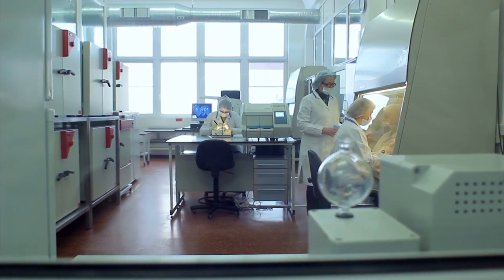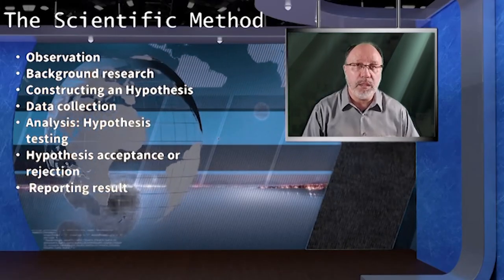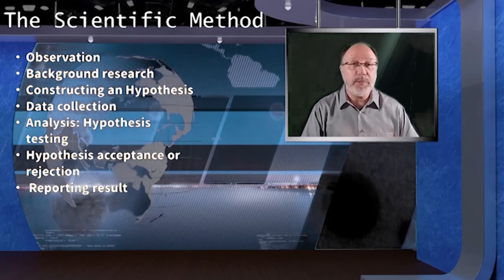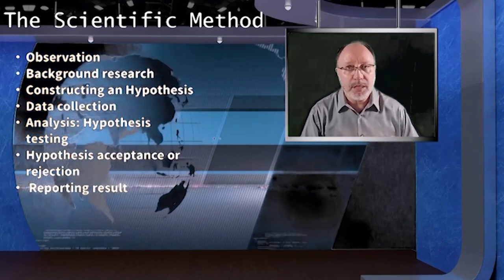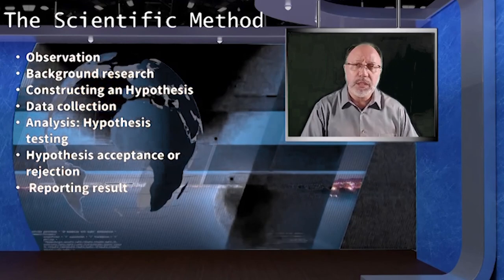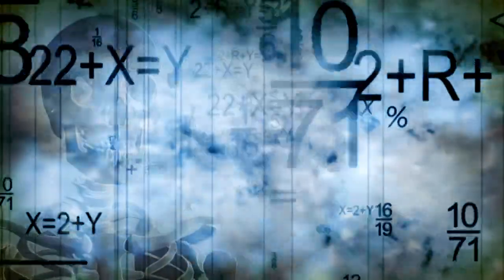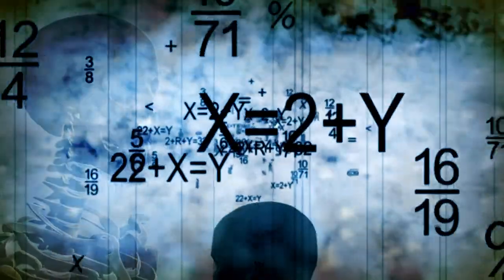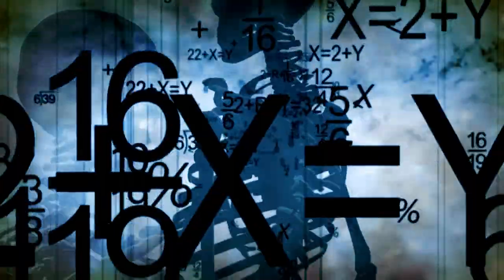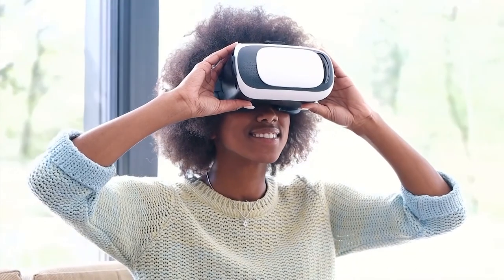Even though we show the scientific method as a series of steps, keep in mind that new information or thinking might cause a scientist to back up and repeat steps at any point during the process. A process like the scientific method that involves such backup and repeating is called the interactive process. Whether you are doing a science fair project, a classroom science activity, independent research, or any other hands-on scientific inquiry, understanding the steps of the scientific method will help you focus your scientific questions and work through your observations and data to answer the questions as well as possible.